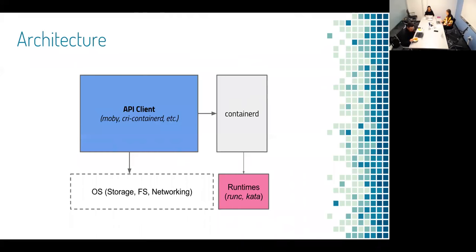One of the goals of ContainerD was also to have a very robust client that you can integrate into your platform. It's currently integrated in Moby and CRI ContainerD. This allows us to keep the services from ContainerD from getting too bloated. For example, with the client we have image pull and push — that actually consists of many various API calls to various services in ContainerD, but we pull that out of ContainerD into the client. ContainerD is what's managing and executing the containers and interacting with the runtimes in your platform, and these are swappable.